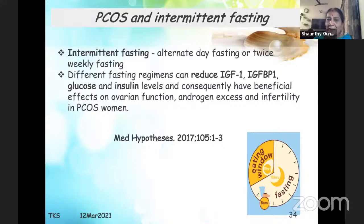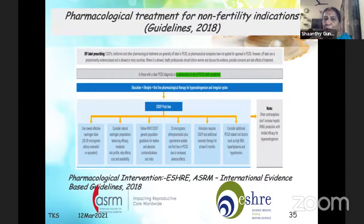Intermittent fasting is also relevant — it reduces IGF-1 and IGF-BP-1 and has a beneficial effect on ovarian function, androgen excess, and infertility in PCOS. For pharmacological treatment for non-fertility indications, OCPs are the first line. Any OCP can be used, following WHO guidelines for relative and absolute contraindications.